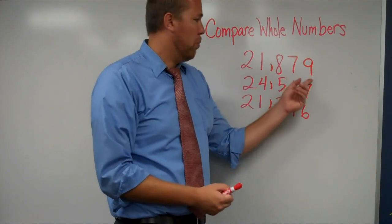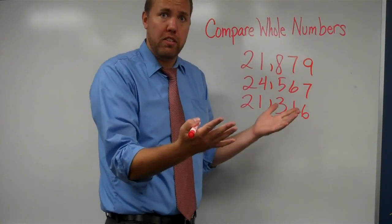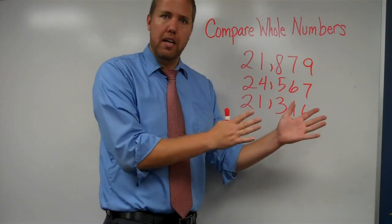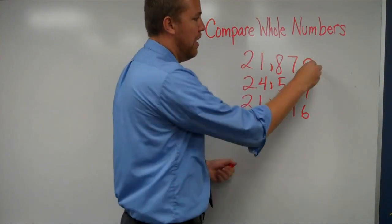Why do we care about ones and tens and hundreds if we're talking 20,000? So we won't worry about those if they're lined up so that we're comparing the same thing.